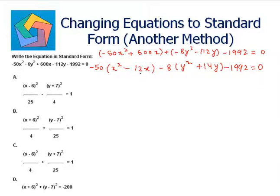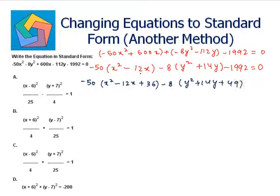So 12 divided by 2 is 6, and 6 squared is 36. We complete the square: minus 50 times (x squared minus 12x plus 36) minus 8 times (y squared plus 14y plus 49) minus 1992 equals 0.